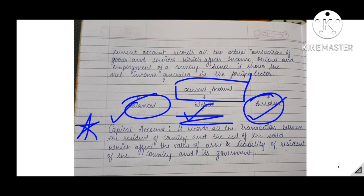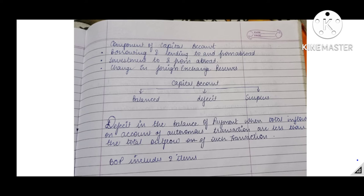Now talking about the second component of Balance of Payment — the capital account. We have already written three things in the current account from the four categories of economical transactions. The last thing — capital transfers — we include in the capital account. It records all transactions between residents of a country and the rest of the world which affect the value of assets and liabilities of the resident, the country, and its government. The capital account is used to finance the deficit in the current account.